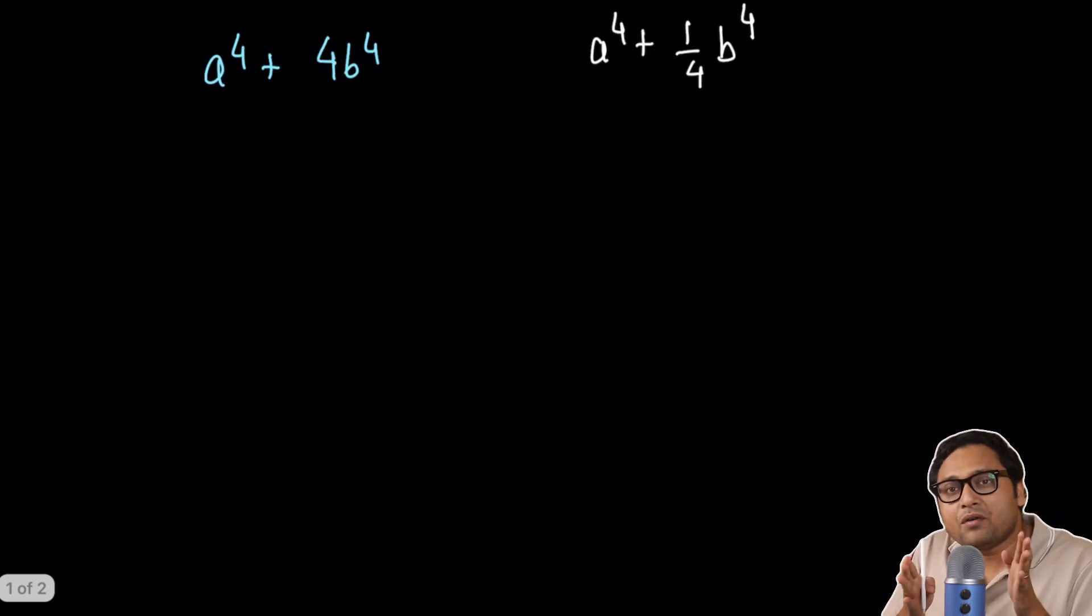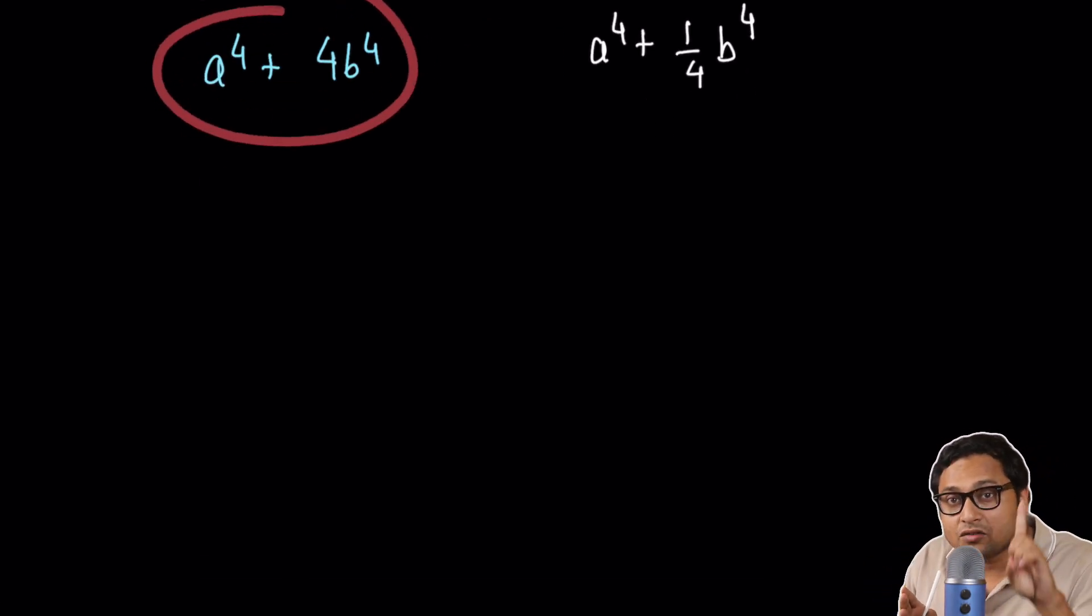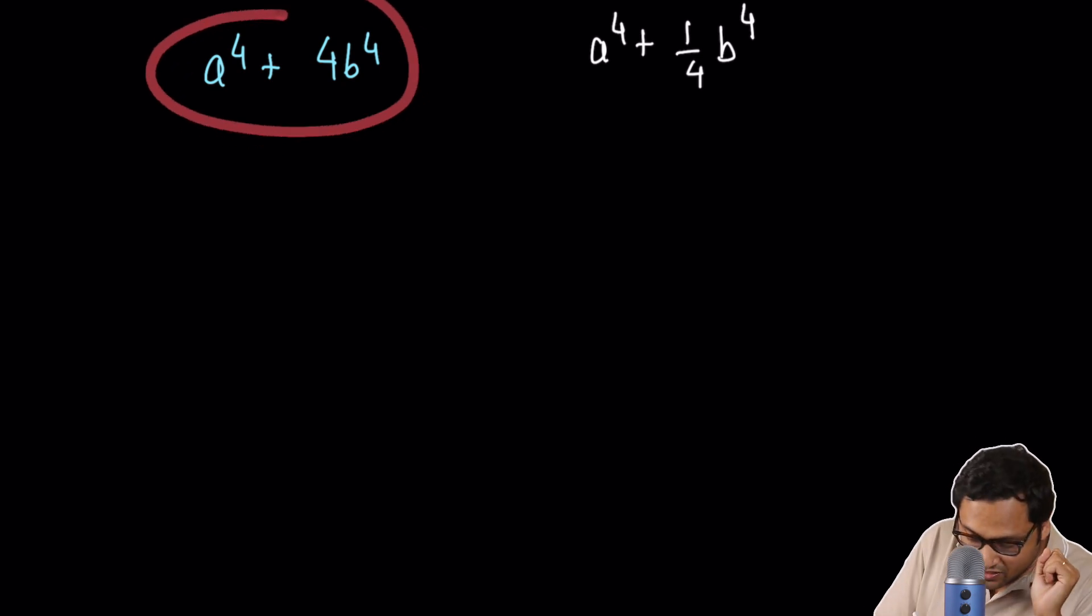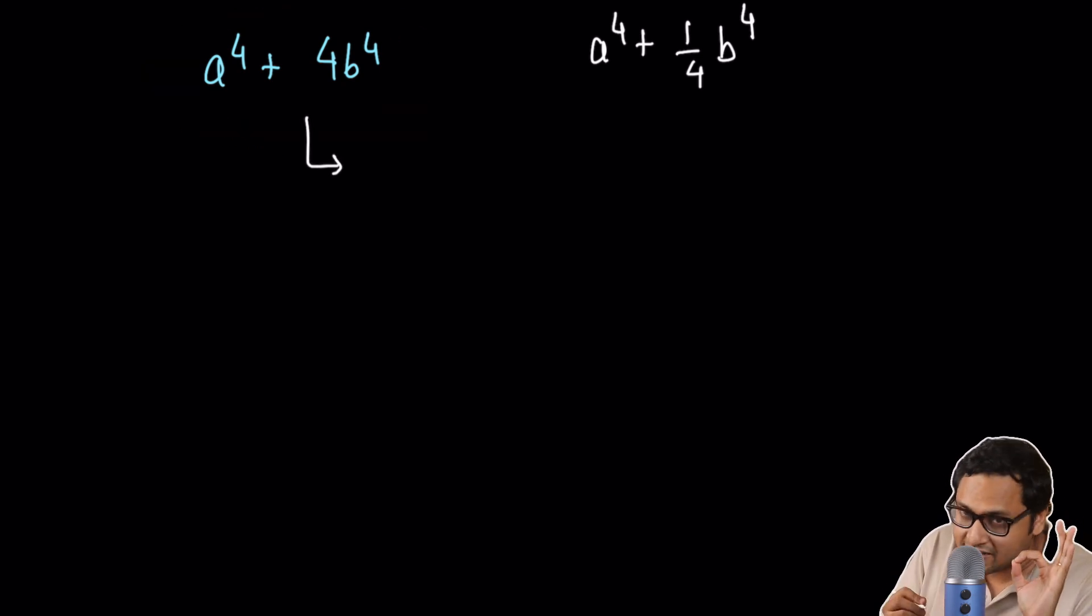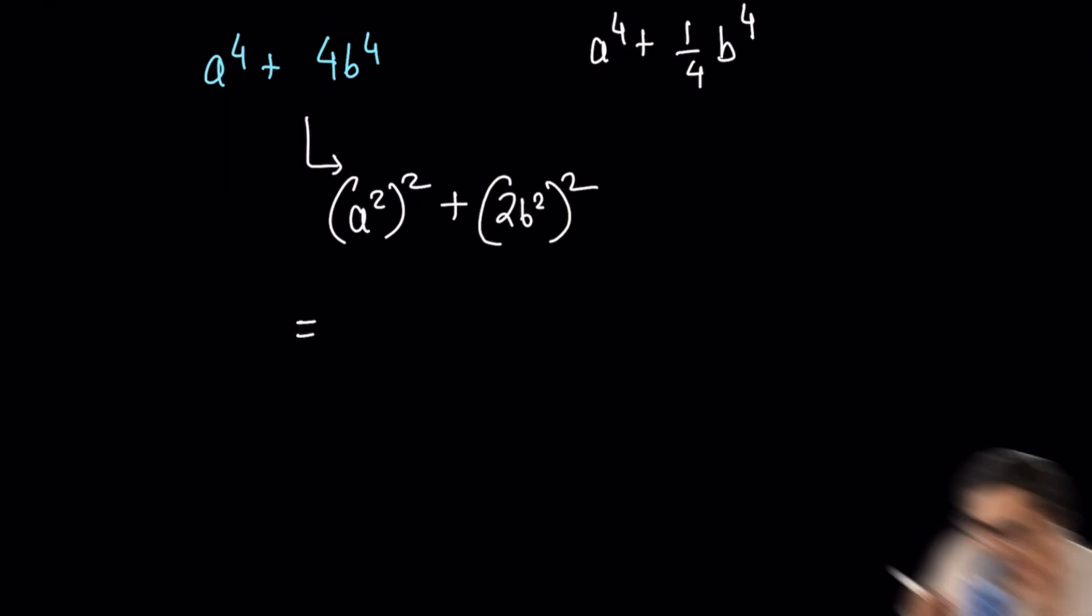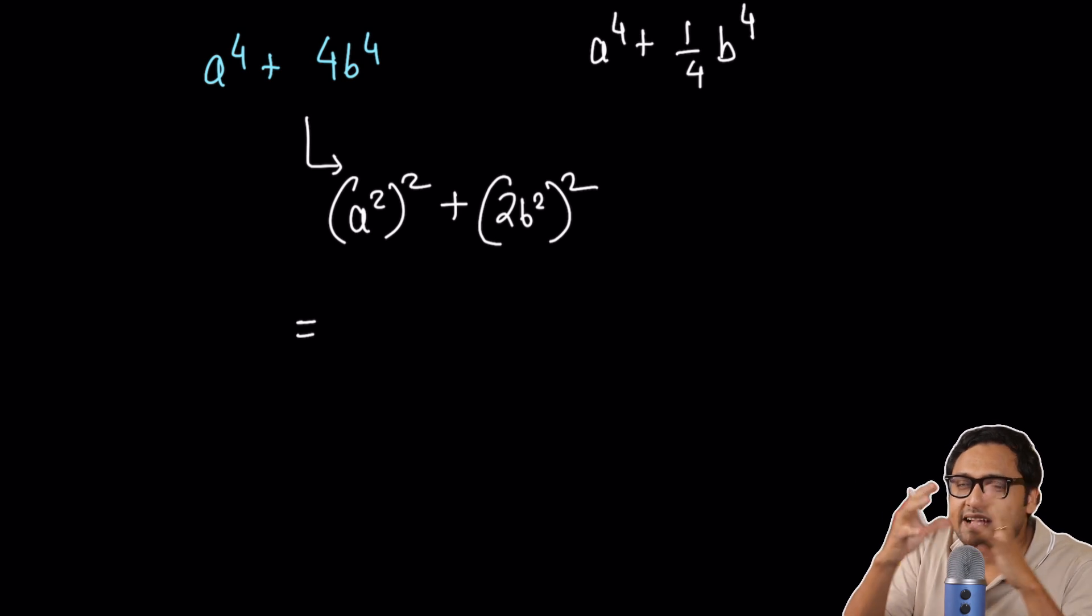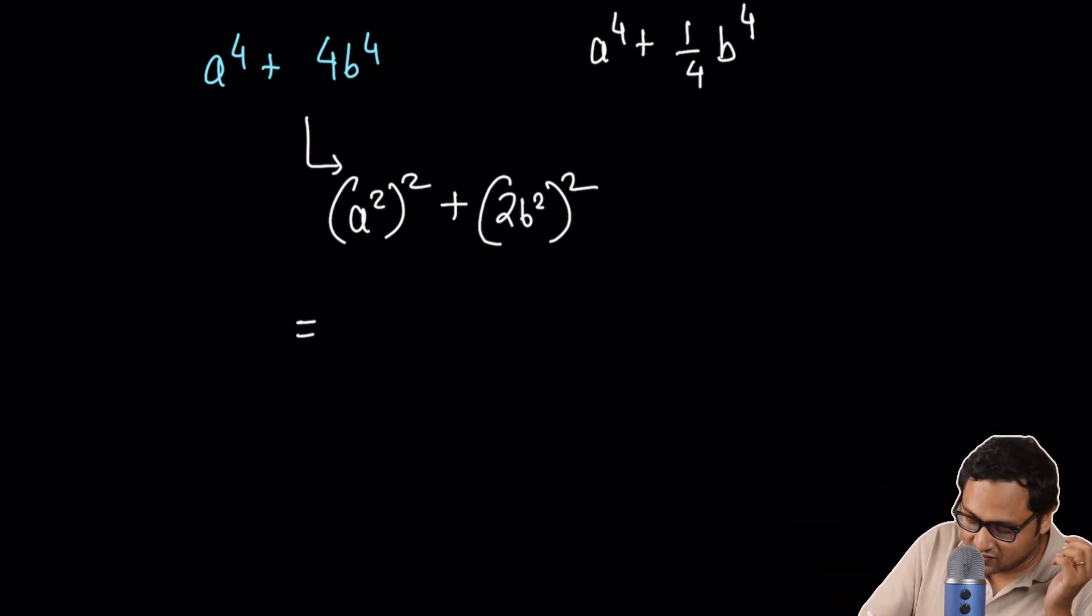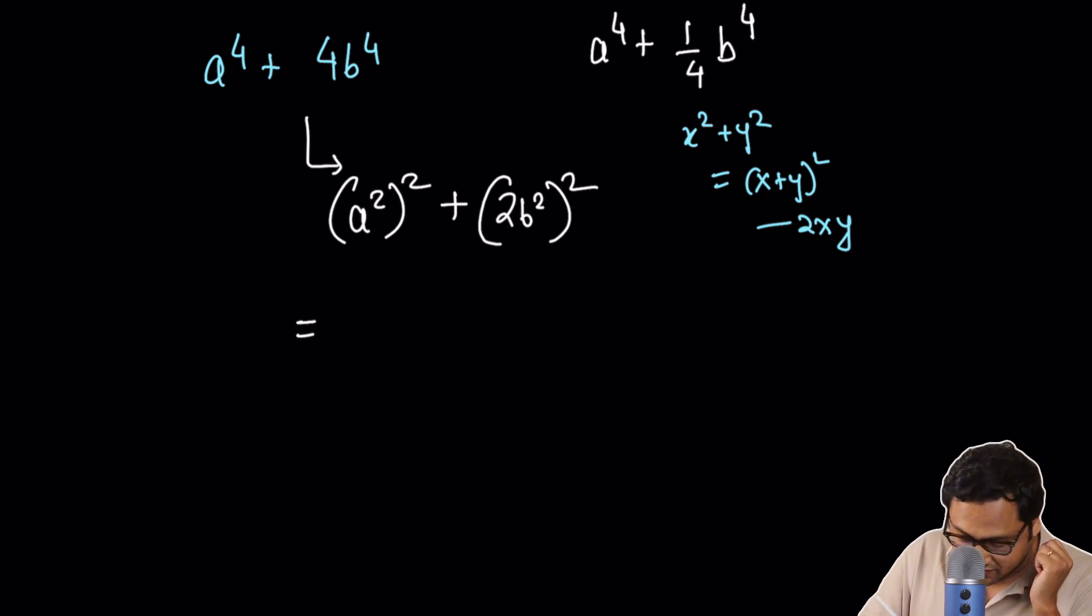Let's look at this a to the power 4 plus 4b to the power 4. I first work on this expression. So it's a very simple factorization. It is named after Sophie Germain, a mathematician from France. I think this is a square whole square plus 2b square whole square and then a square plus b square, x square plus y square is x plus y whole square minus 2xy. So a square plus 2b square whole square minus 2 times a square times 2b square.